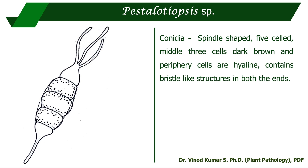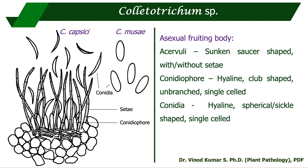Pestalotiopsis causes gray blight disease in a variety of horticultural crops. The conidia are spindle-shaped and five-celled, where the middle three cells are dark brown and the peripheral cells are hyaline, with bristle-like structures at both ends. Colletotrichum causes leaf spot, dieback, fruit rot, and anthracnose. It produces an asexual fruiting body called an acervulus — a sunken, saucer-shaped structure — sometimes with setae and sometimes without, depending on the species and environmental factors.